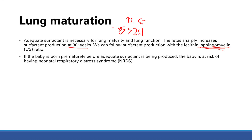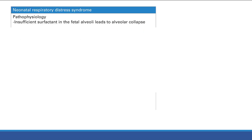If the baby is born prematurely before adequate surfactant is being produced, the baby is at risk of neonatal respiratory distress syndrome. Without enough surfactant, the alveoli don't open, you don't get enough gas exchange, and you have serious problems.